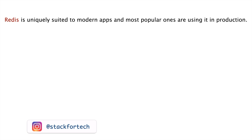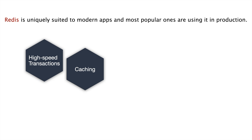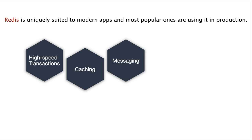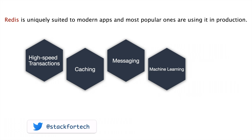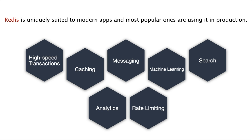There are major popular applications that we interact with socially which are actually making use of Redis in their application architecture. Redis capabilities include high-speed transactions, caching — the most important use case — messaging and pub/sub, machine learning, searching, analytics, and rate limiting. Our focus today will be on caching.